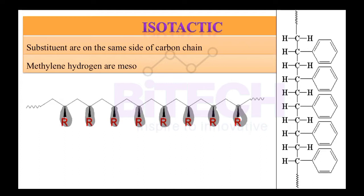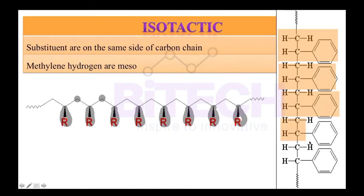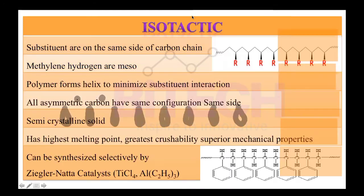Since the CH2 groups are positioned symmetrically, a plane of symmetry exists and they are therefore meso. Looking at this example, parts 1, 2, and 3 are all in a symmetrical order and in a particular direction. When such carbon chains exist, this arrangement is called isotactic.